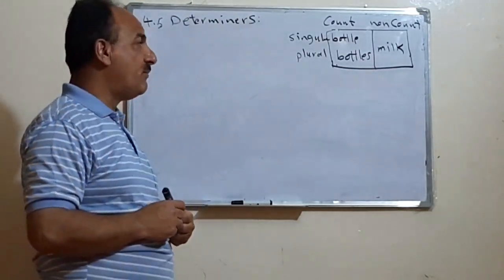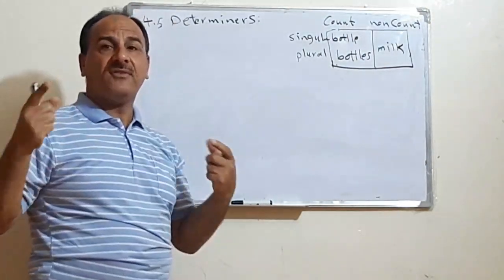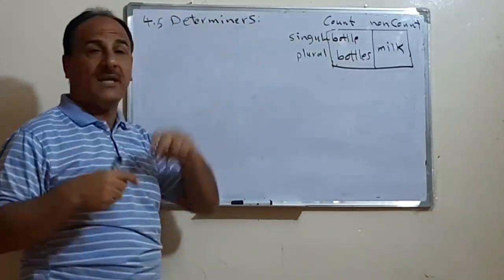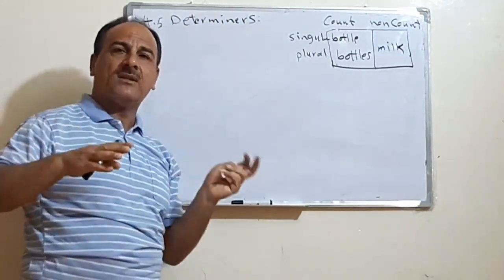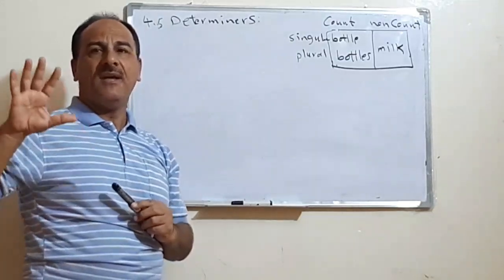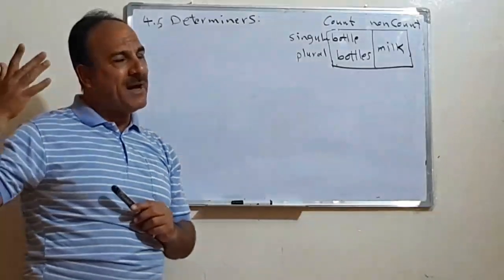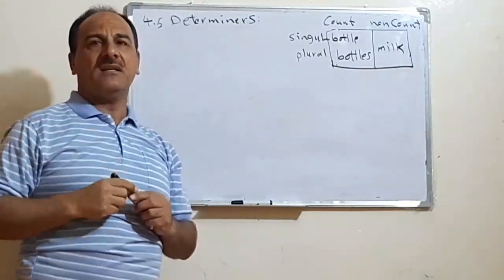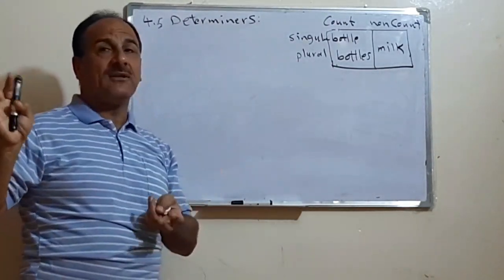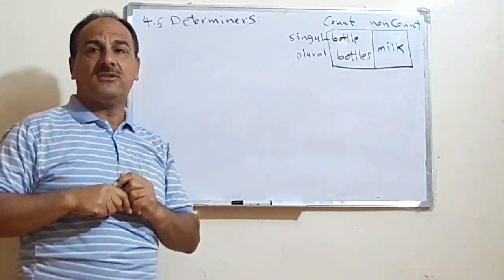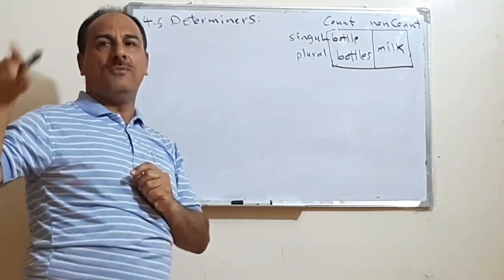What is meant by determiners? Determiners are certain words that we repeatedly use before nouns. We call them determiners, or in other words, we can predict that what comes after these words is a noun. For example, after 'a' or 'an', we have a singular noun. But if I say 'many', then you predict countable nouns follow — many cards, many problems, many issues, hopes, etc.